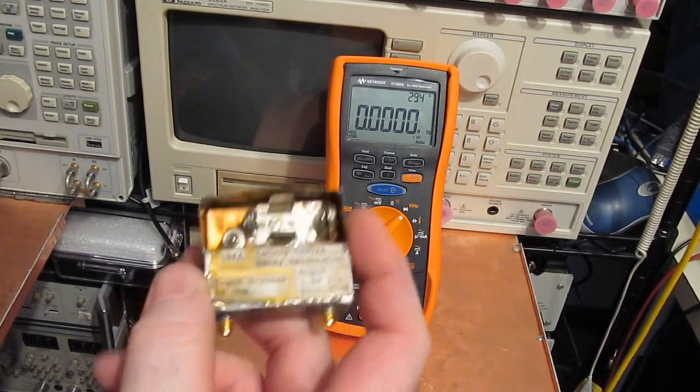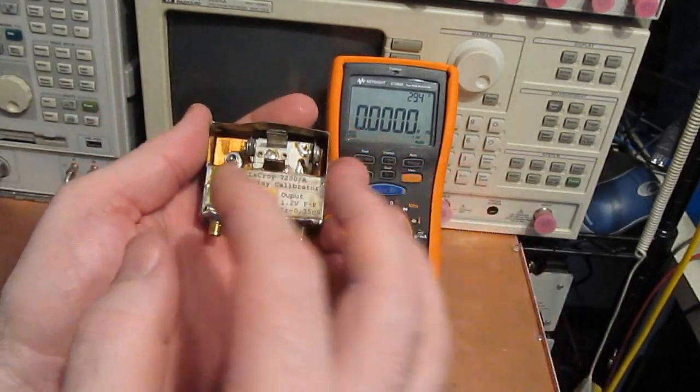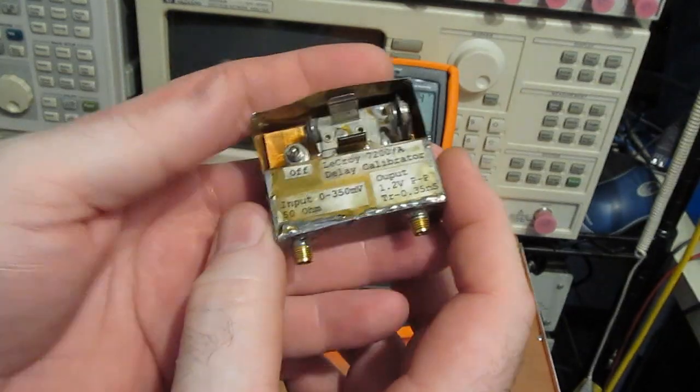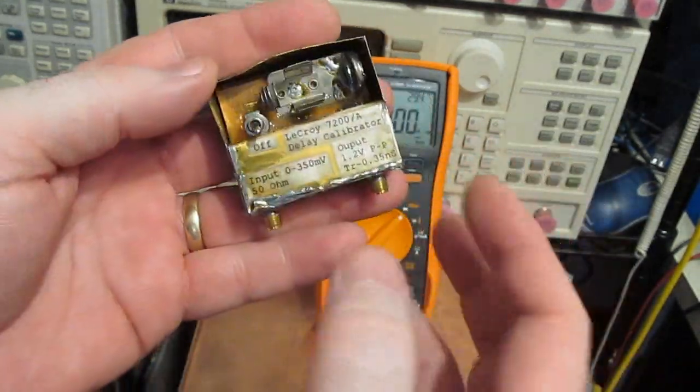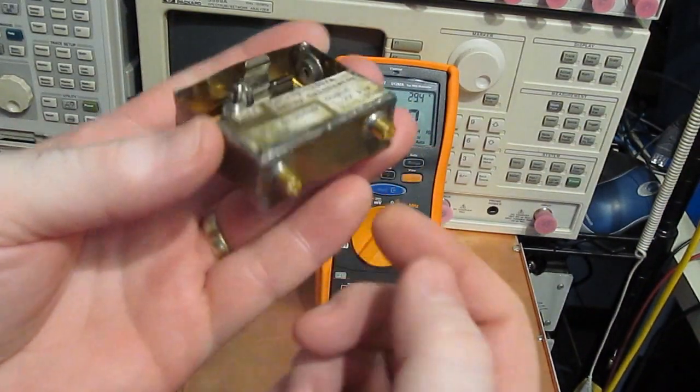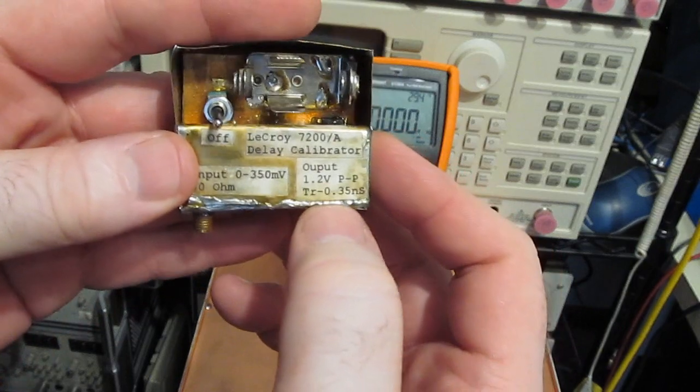One of the things I was curious about is if we drove the meter with a faster rise time, would it make a difference. So here I have a small module that I made to calibrate my oscilloscopes. Basically what I can do is attach this to my RF generator, and then the output of this will give me a fast rise time, in this case about 350 picoseconds with a peak-to-peak amplitude of 1.2 volts.